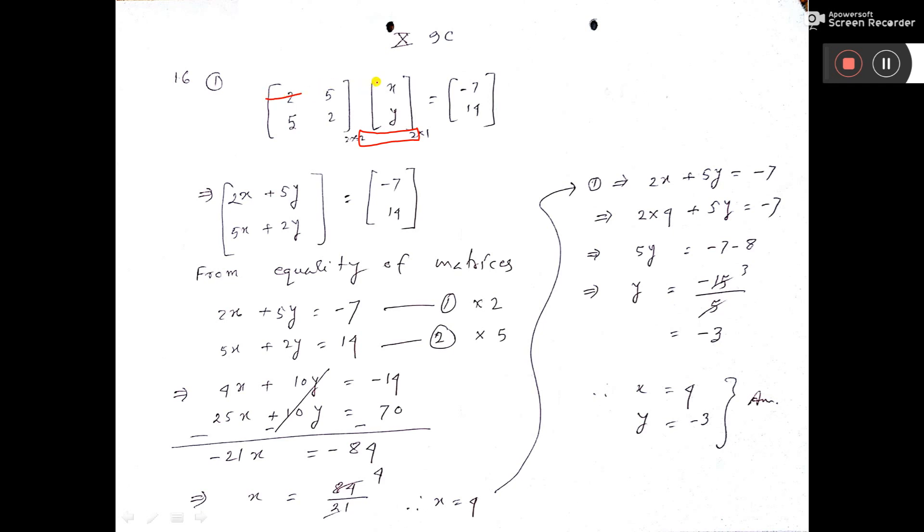Then multiply first row into first column. That is 2 into x plus 5 into y. And 5 into x plus 2 into y.